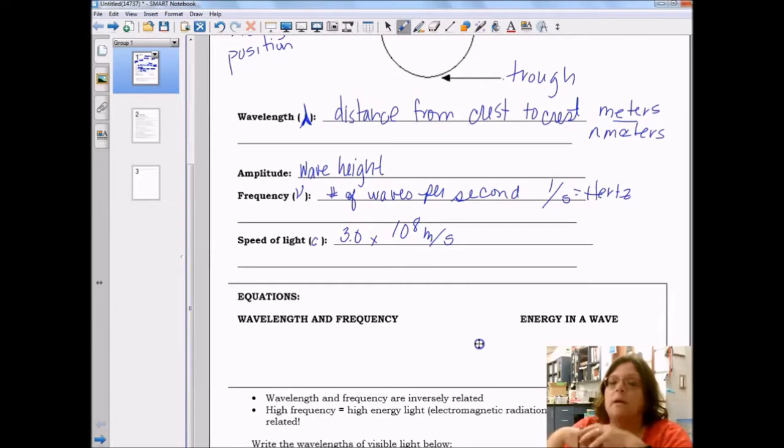Now, as we study wavelength, we will discover that wavelength and frequency vary inversely, which means that as one goes up, the other goes down.